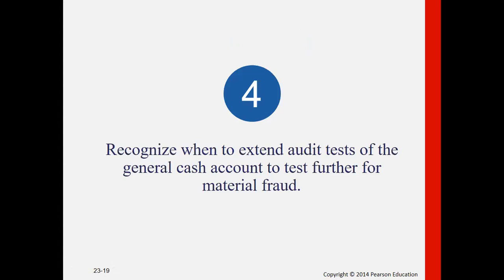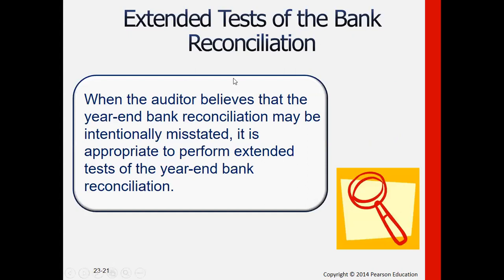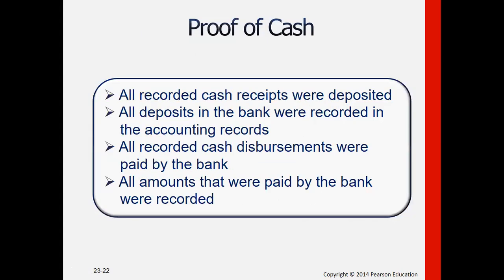Objective four is to recognize when to extend audit tests of the general cash account to test for material fraud. Since cash is the most liquid item, we may need to extend procedures very close to or at year-end, especially for bank reconciliation. We can also perform extended tests of the bank reconciliation if the auditor believes the year-end balance may be intentionally misstated, going beyond the cutoff period. Proof of cash is a two-date form of bank reconciliation performed by the auditor.